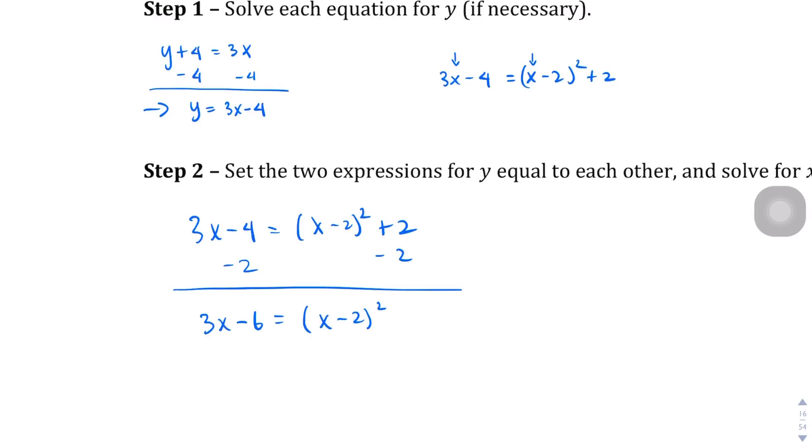Now, once we get to this point, you know what we want to do? We probably want to expand this out. Let's do that. 3x minus 6. And if we expand out the x minus 2, x minus 2, this is x squared, negative 2x, negative 2x, plus 4. So on the right-hand side, we're going to have x squared minus 4x, right, since we have two of them, plus 4.